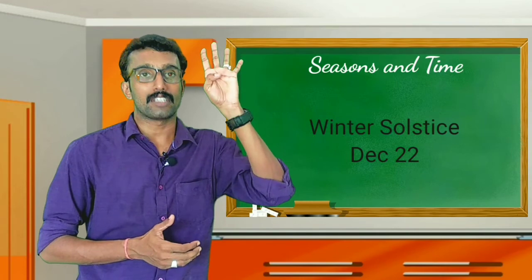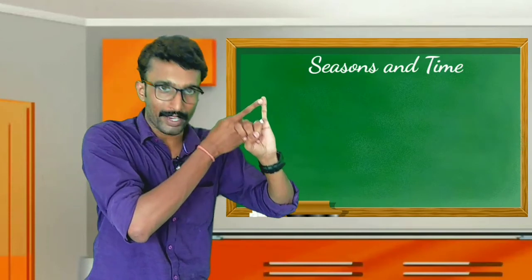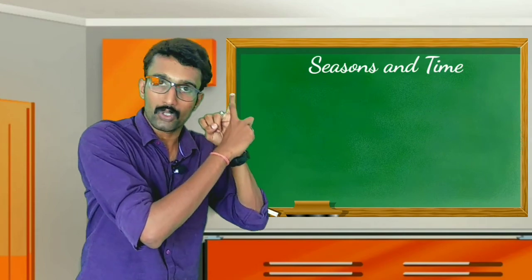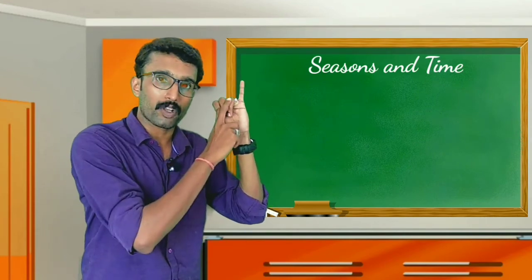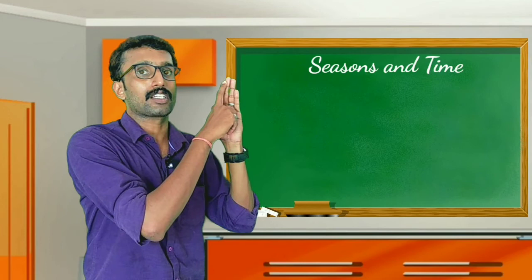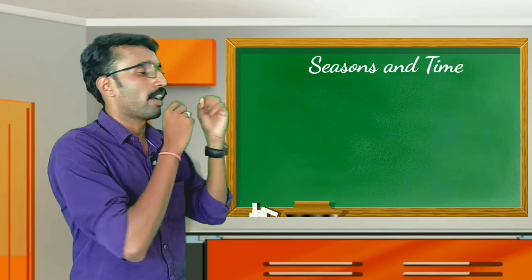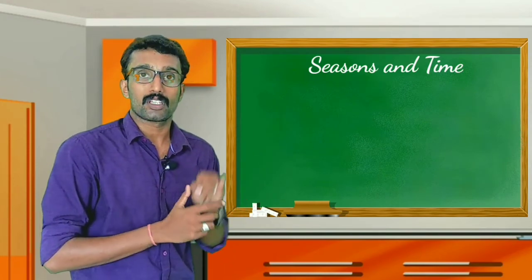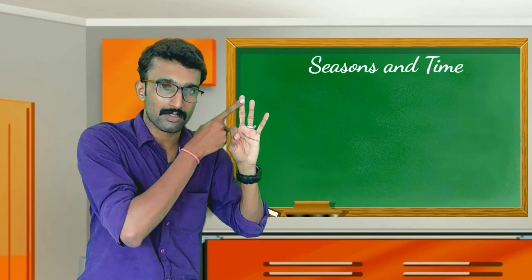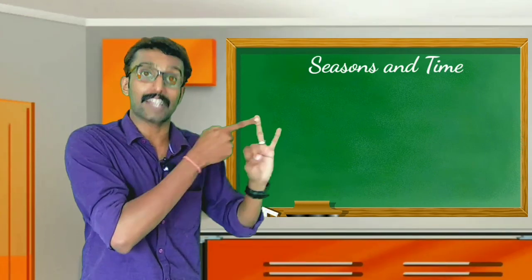So these are the four important days. First, March 21st — the position of the sun is over the equator, equal day and night, and the name is equinox. Second, June 21st — the sun is over the Tropic of Cancer, the longest day in the northern hemisphere, and the name is summer solstice. Third, September 23rd — the sun is over the equator, equal days and nights, and again the name is equinox. Fourth, December 22nd — the sun is over the Tropic of Capricorn, the longest night in the northern hemisphere, and the name is winter solstice.